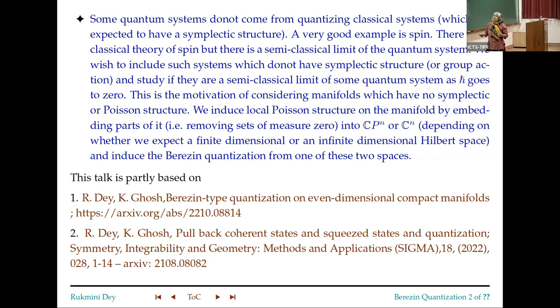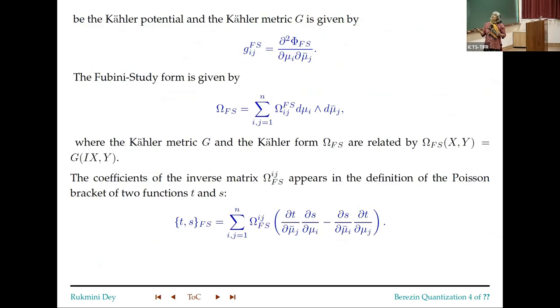And how do we do this? We just consider manifolds which have no symplectic or Poisson structure, but we induce the local structure on the manifold by embedding parts of it into CP^N or C^N. We will embed parts of it in CP^N if you expect a finite dimensional Hilbert space, we will put it into C^N if you expect an infinite dimensional Hilbert space. And we will induce the Berezin quantization from these two spaces. So this is joint work with Kohinur Ghosh.